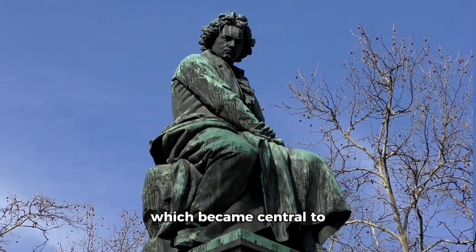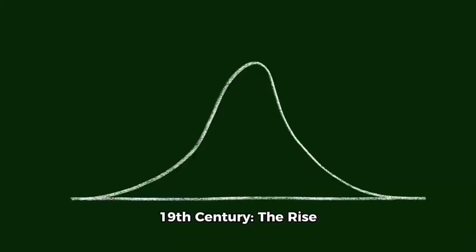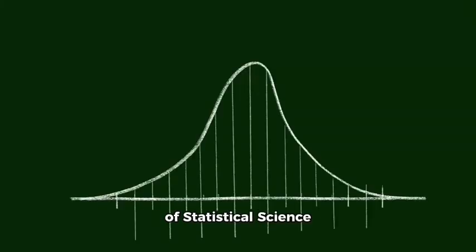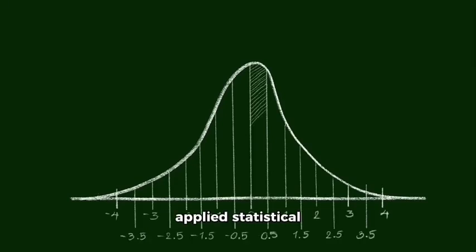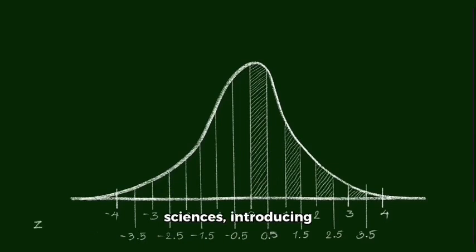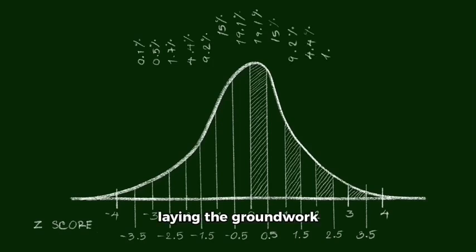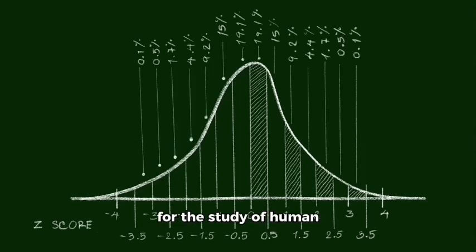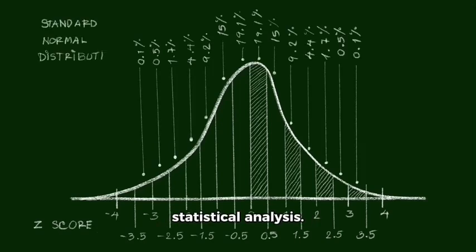19th century: the rise of statistical science. Adolph Quetelet, a key figure in the 19th century, applied statistical methods to social sciences, introducing concepts like the average man and laying the groundwork for the study of human characteristics using statistical analysis.